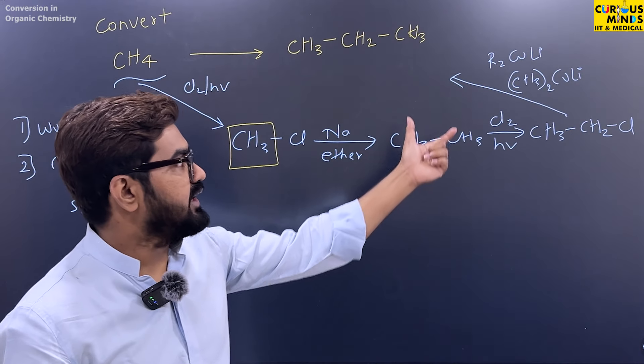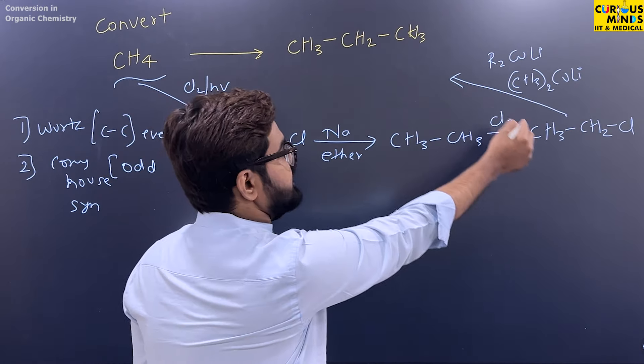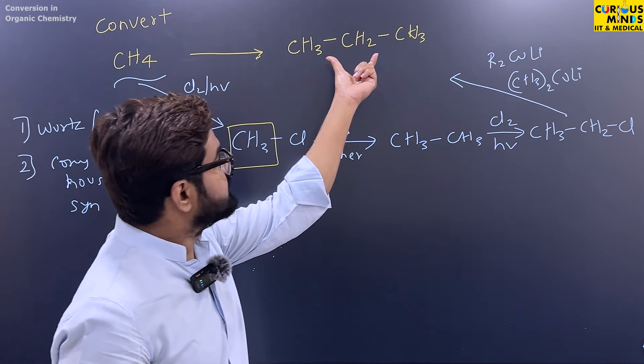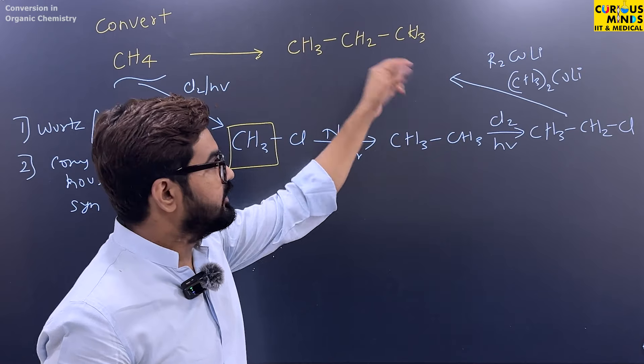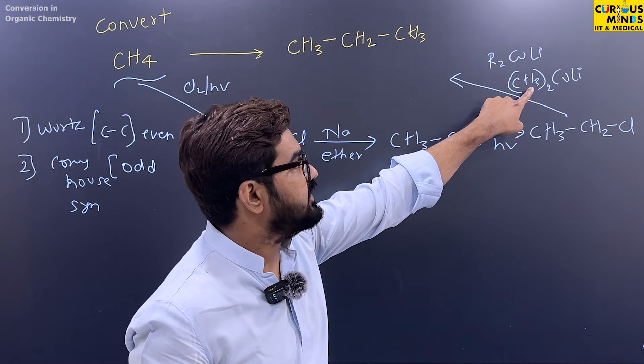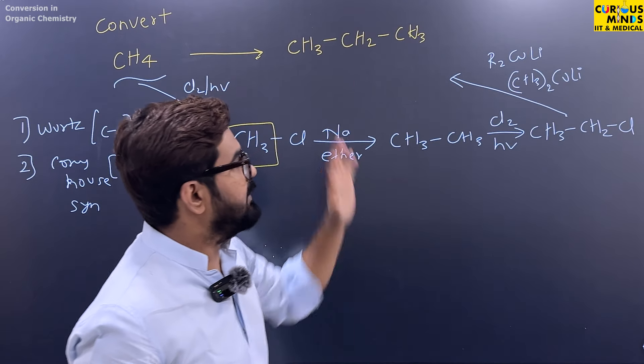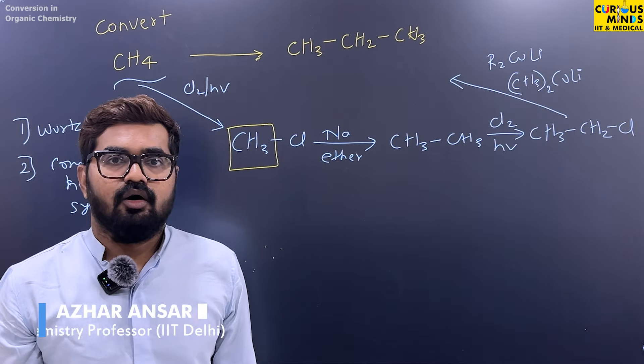So Gilman reagent, just like you have added, this is what you call alkyl halide. This will be converted into propane. Because this CH3, this (CH3)2, it acts as a nucleophile. So it will attack here. And we will make propane.